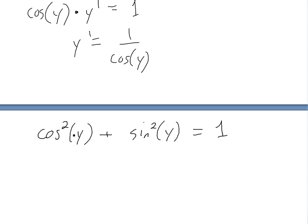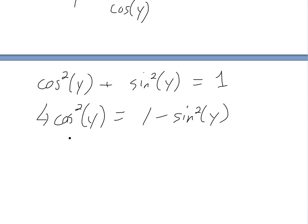So basically if we rearrange this, solving for cos y, we're going to get, let's say cos squared y is equal to 1 minus sine squared y. And then if we square root this we're going to have cos y is equal to plus or minus square root of 1 minus sine squared y.